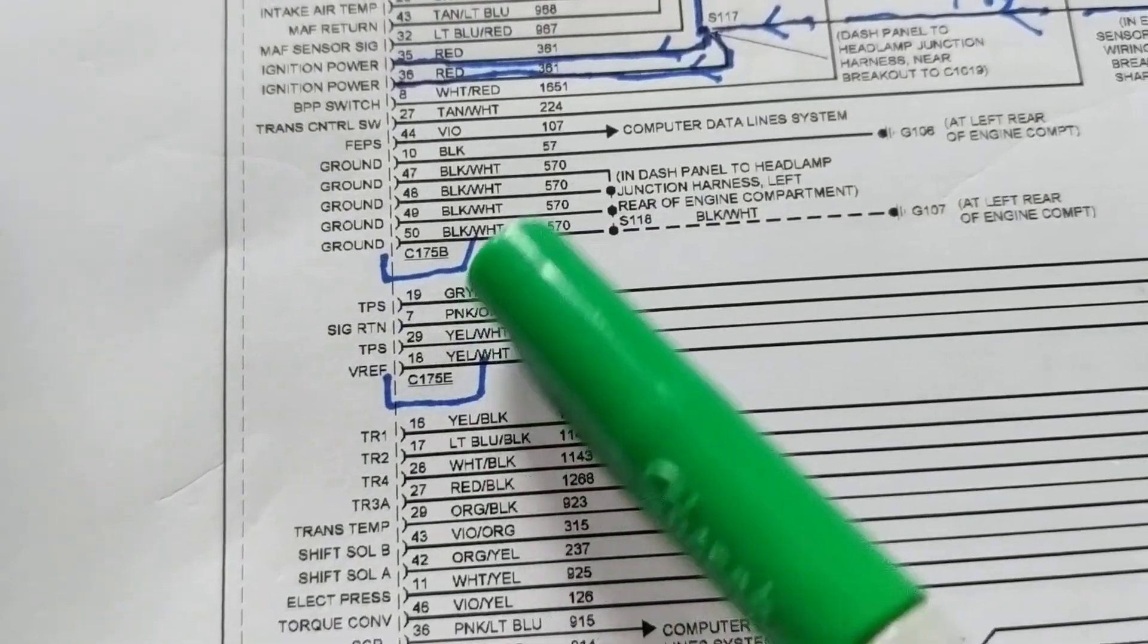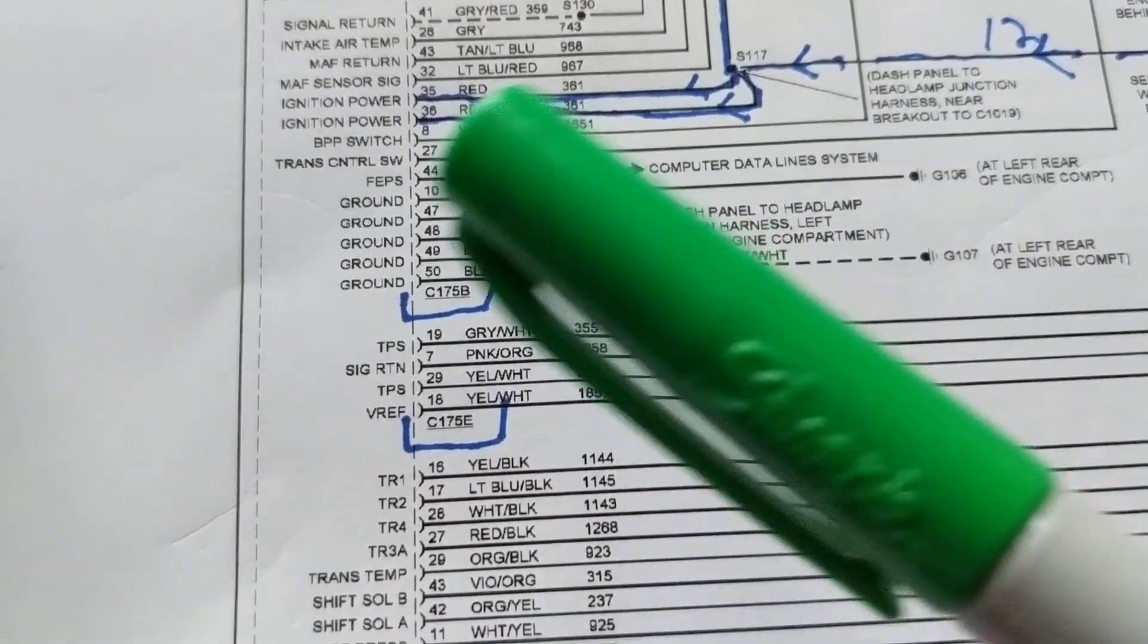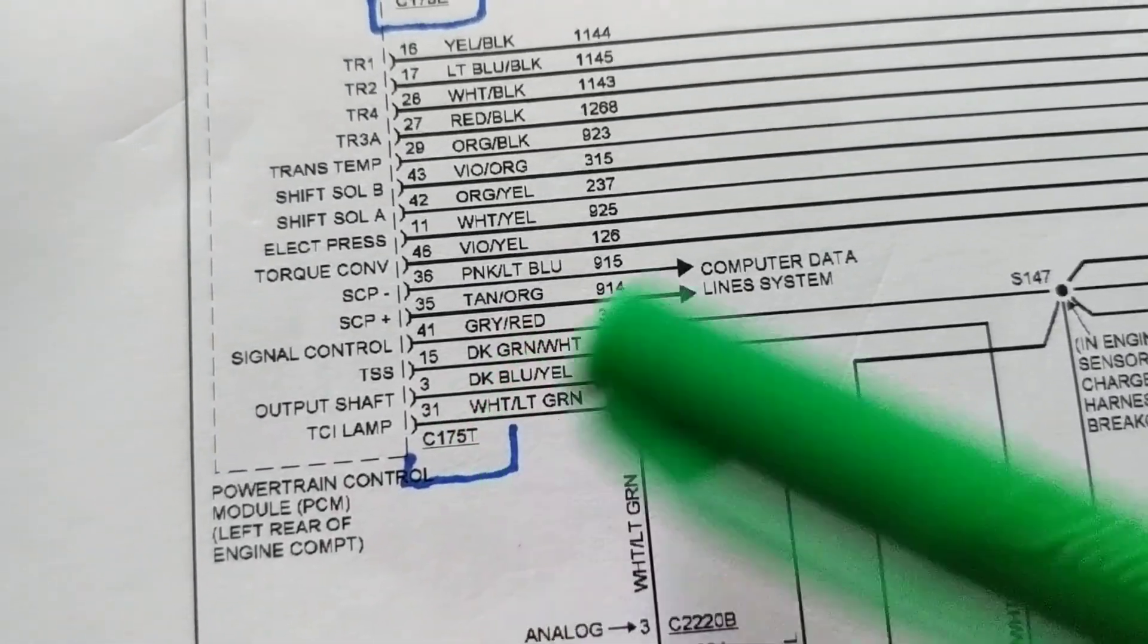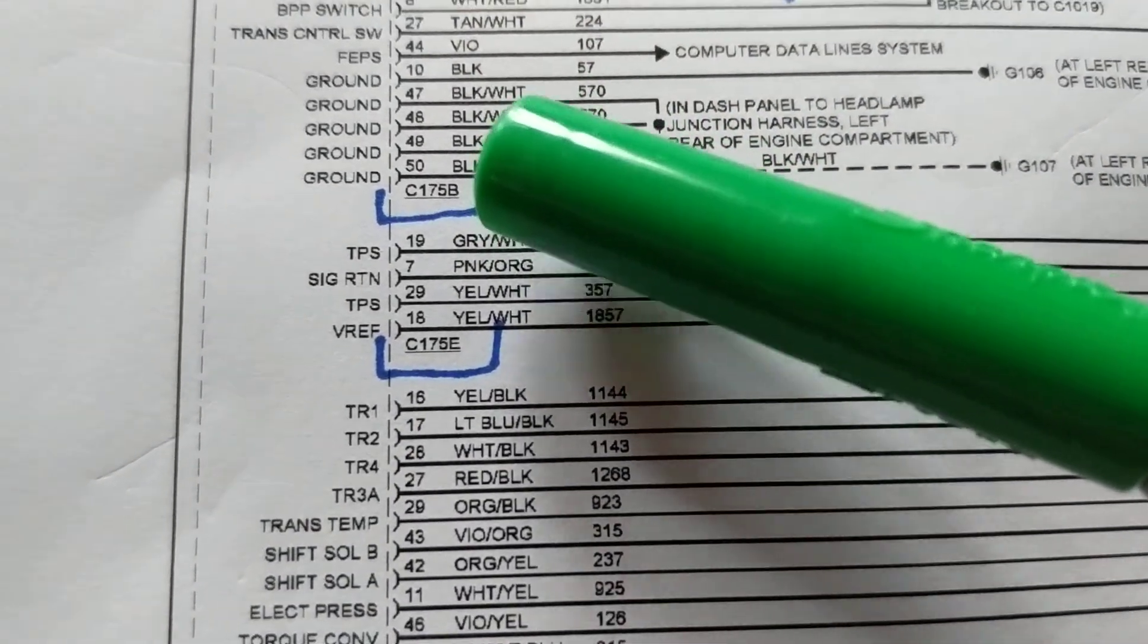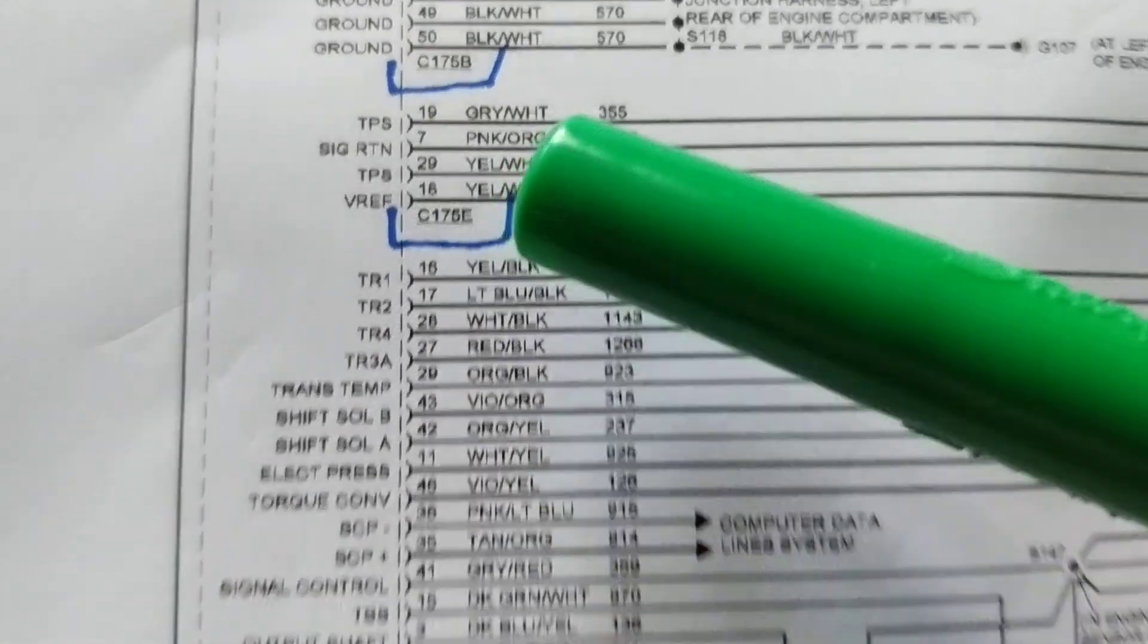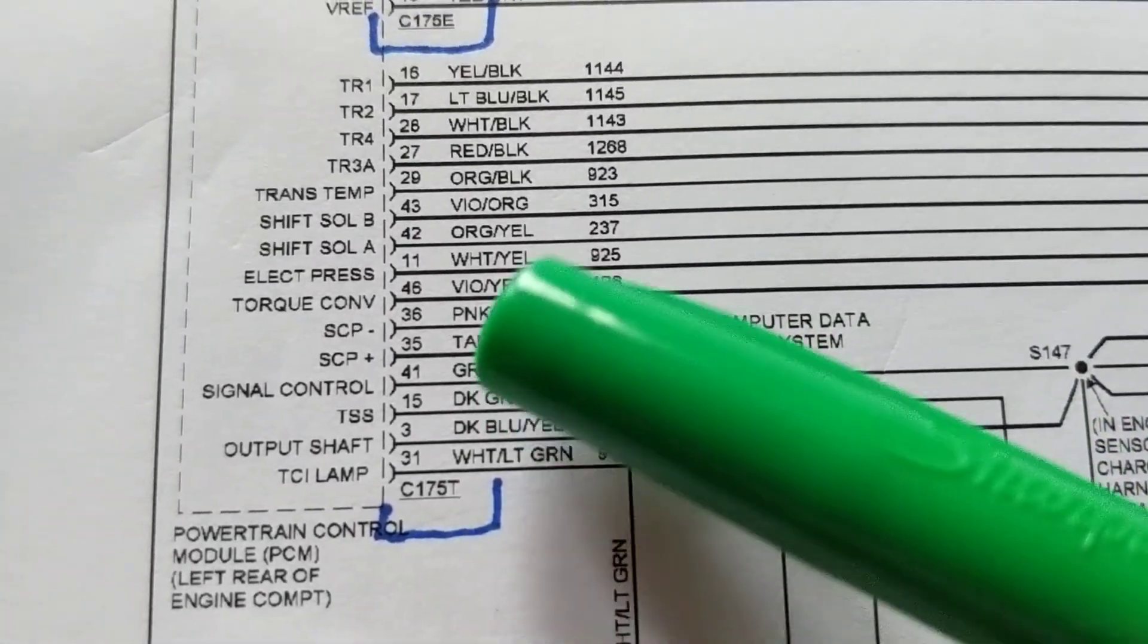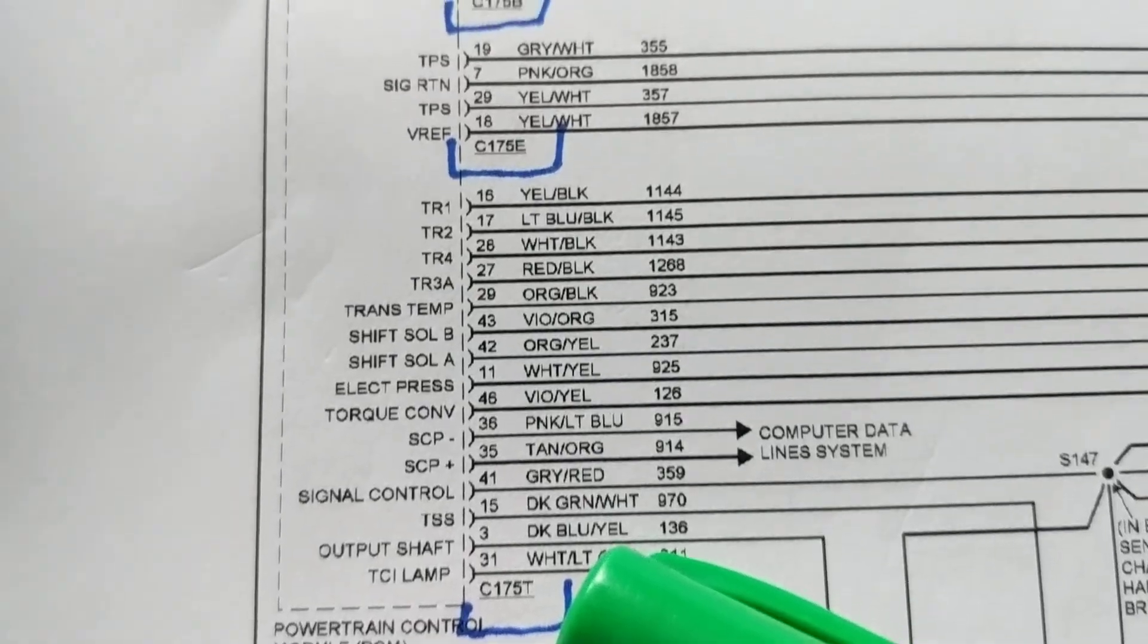As I specified before, there are multiple connectors with pins. So you have to make sure to go to the proper connector. Now you notice C175, C175, C175. They all begin with the same numbers, so it's easy to make a mistake. So what you do is you have to pay attention to the last letter after the connector. You see this is a C175B. This is a E, and this is a T as in Tom. So therefore, if I want to go to the computer data lines and I want to find pin 36 and 35, I have to go to C175T, that connector.